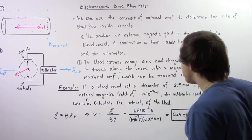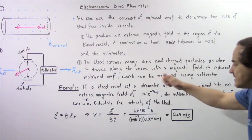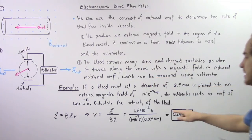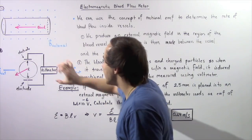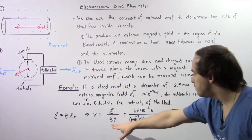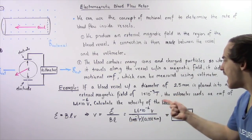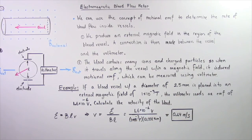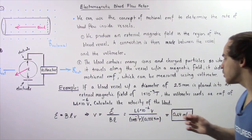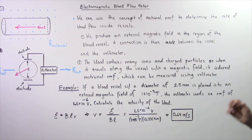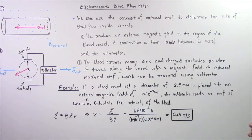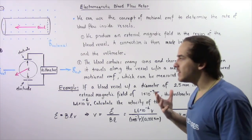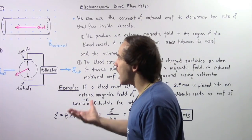Our induced EMF is 1.6 times 10 to the negative 6 volts, our B is 1 times 10 to the negative 3 teslas, and our L is 0.0025 meters. Dividing, we get 0.64 meters per second as the velocity of the blood within the blood vessel.